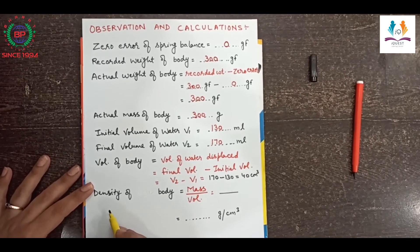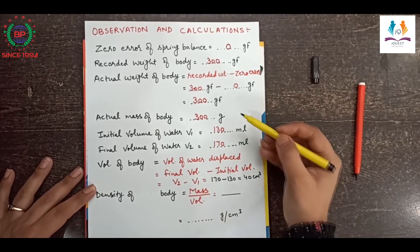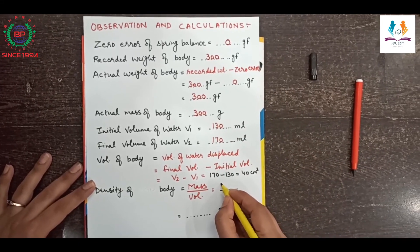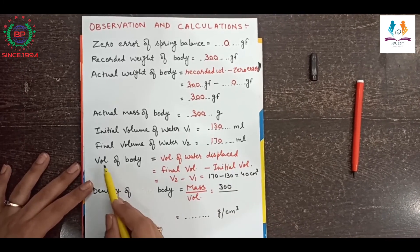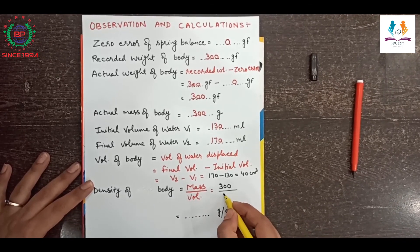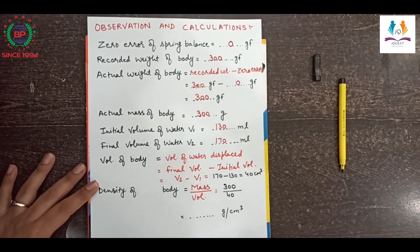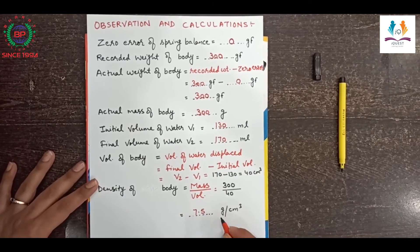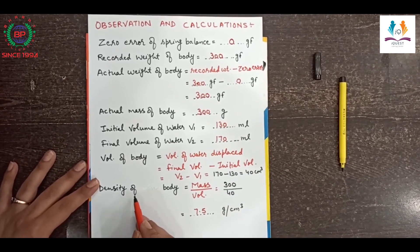Now using the formula for density — mass per unit volume — the mass is 300 grams and the volume of the body is 40 centimeter cube. Solving this gives 7.5 grams per centimeter cube. So the density of the body is 7.5 grams per centimeter cube.